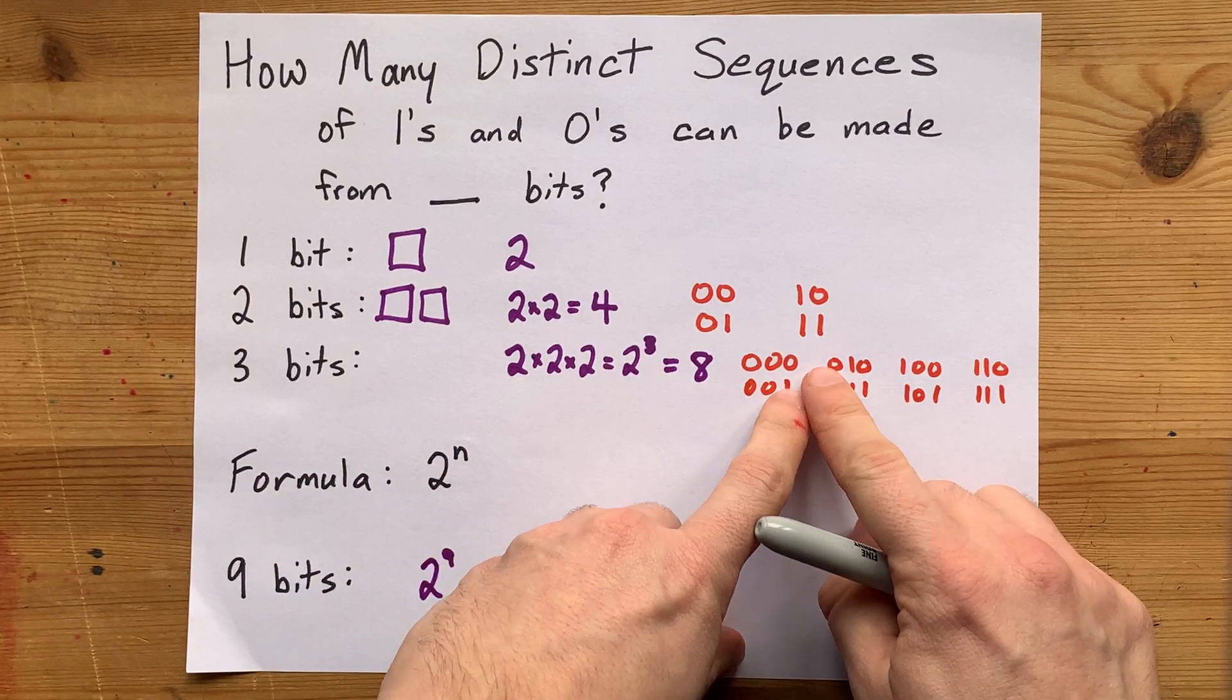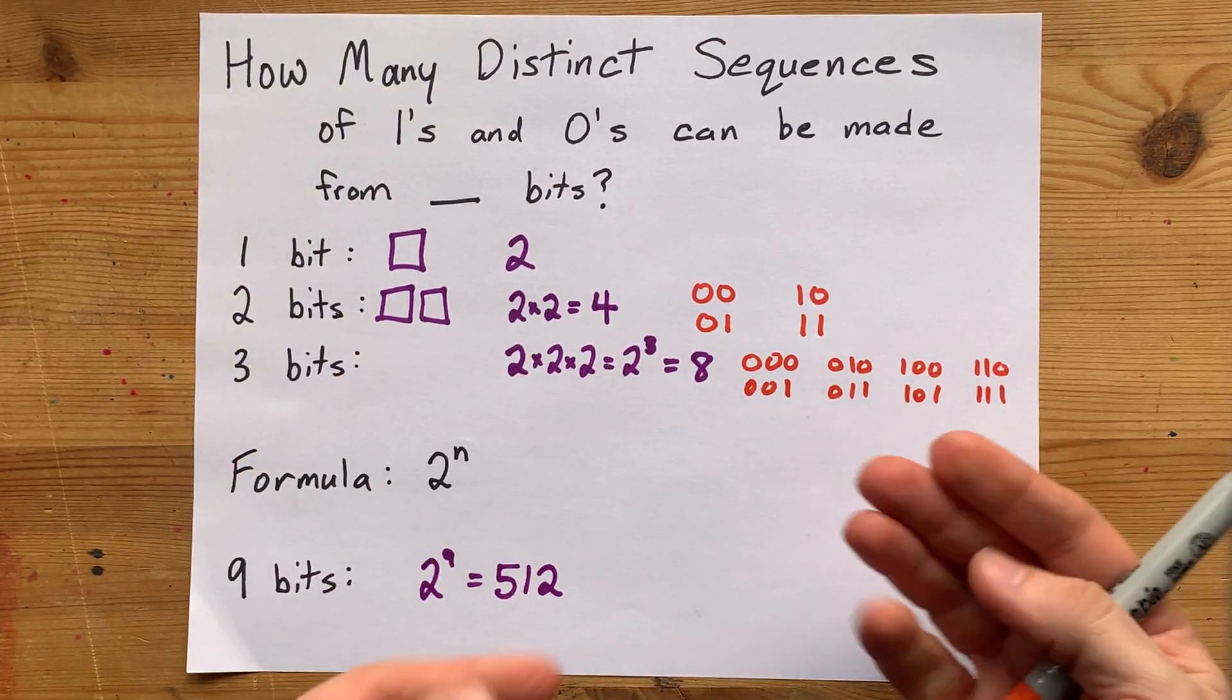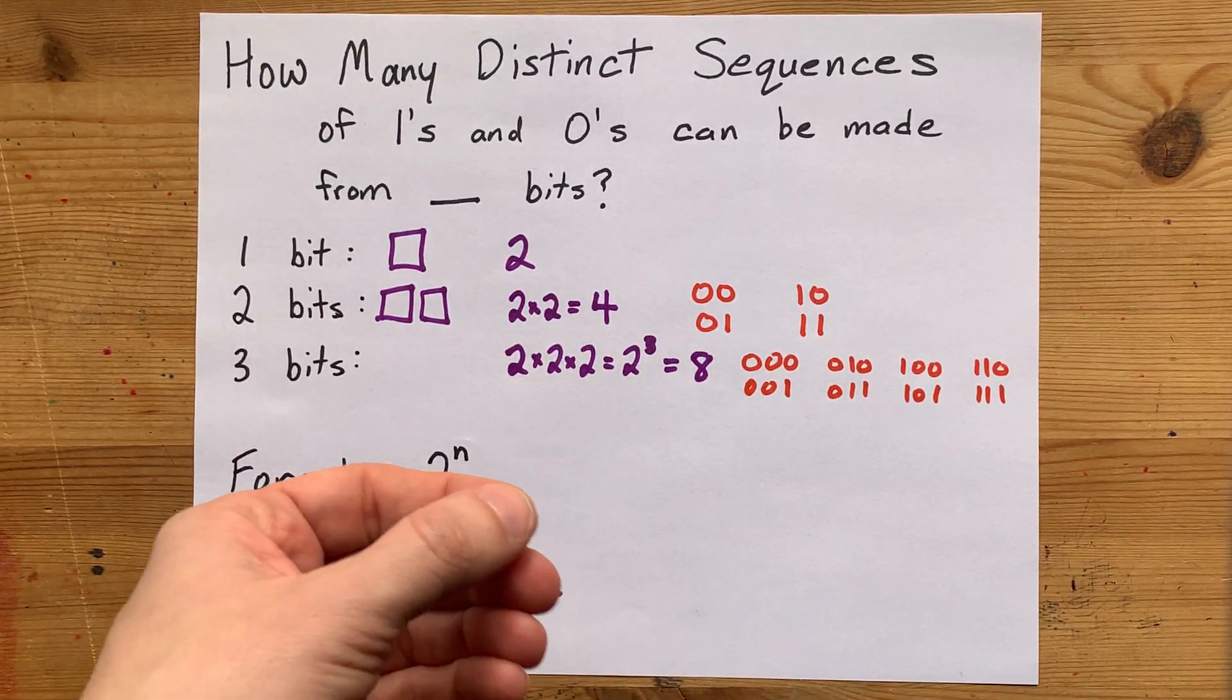And to get to four bits, you'd copy out all of these twice. One of them gets a 0, one of them gets a 1. You're doubling the number of possibilities every time you add an extra bit.